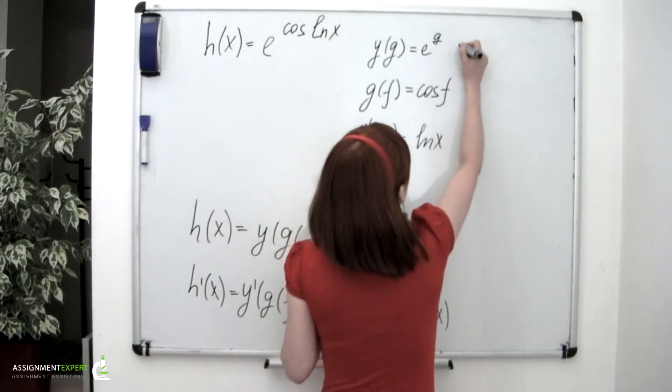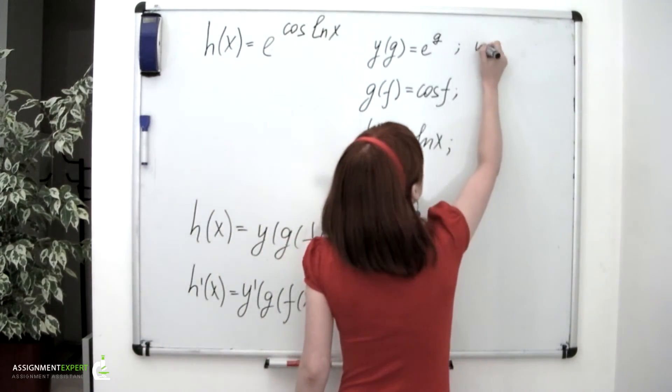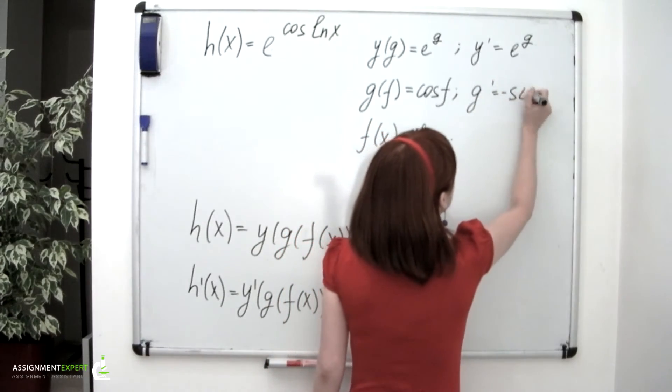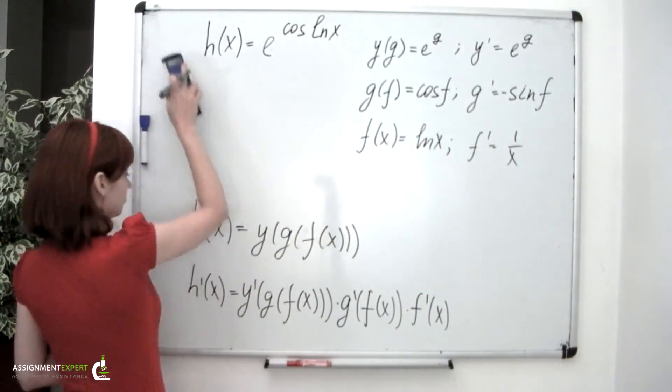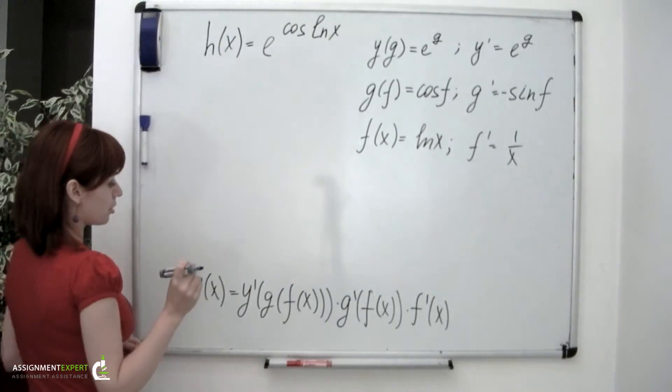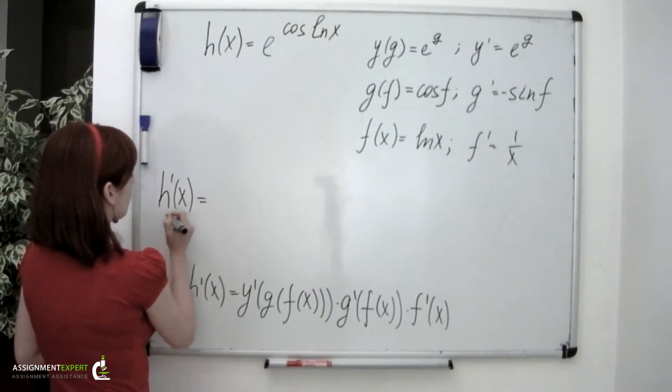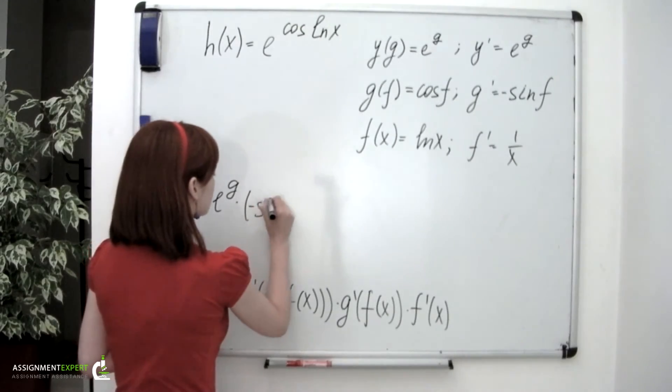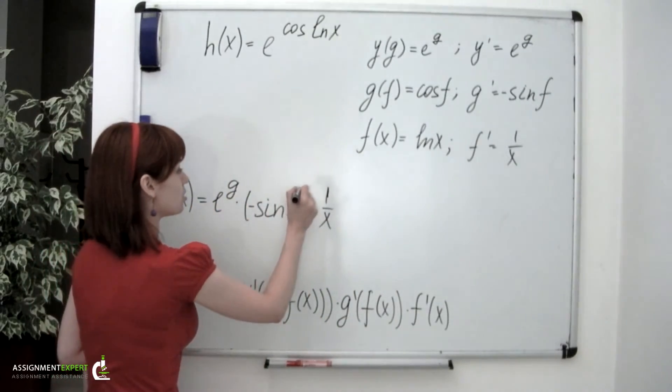Now we're also going to need derivatives of these three functions and those we can find using table of derivatives for standard functions. And so y prime equals e to the g, g prime equals negative sine of f, and f prime equals 1 over x. And so according to this formula we have, derivative of this function will be equal to the following: e to the g times negative sine of f times 1 over x. And we should not forget to substitute expressions for g and f.